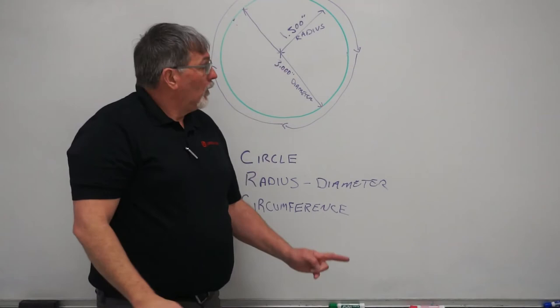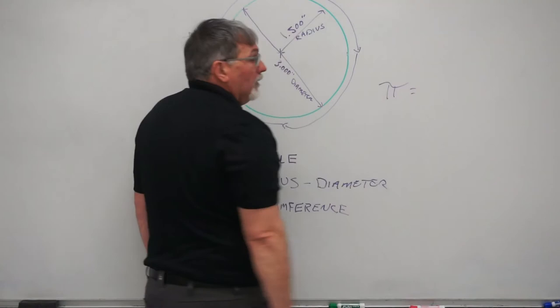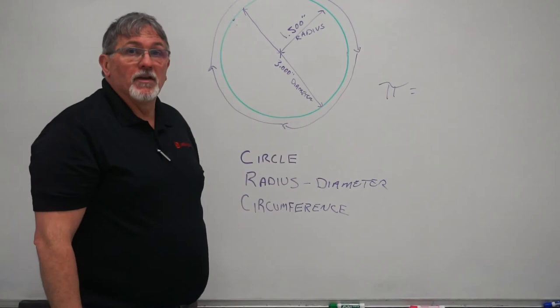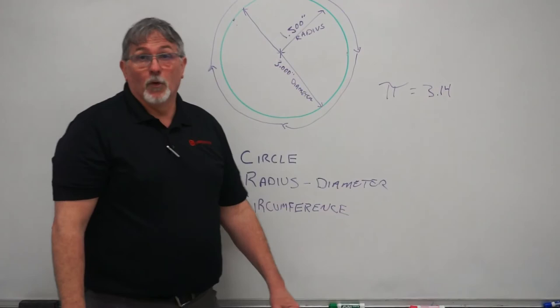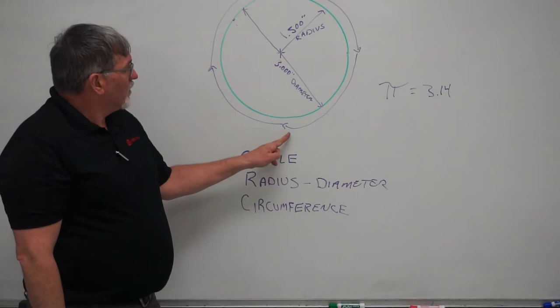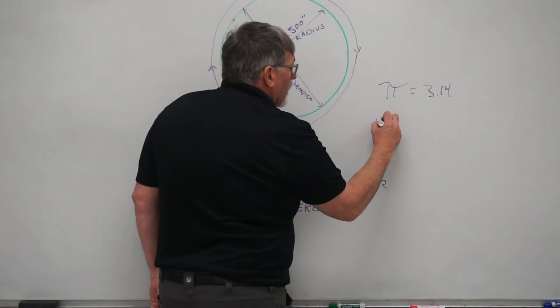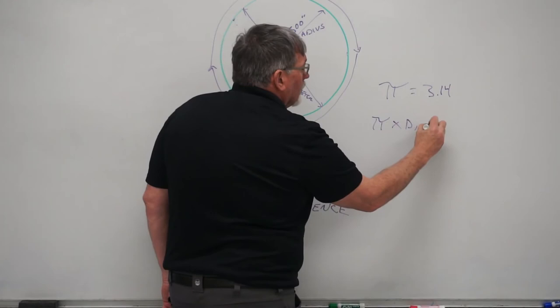Well, this is where this magic number that we have, it's called pi. You guys have heard that term before. Pi, and that number is a constant. It never changes. And that number is 3.14. And that number can go on forever. But we'll use 3.14 as a simple number.